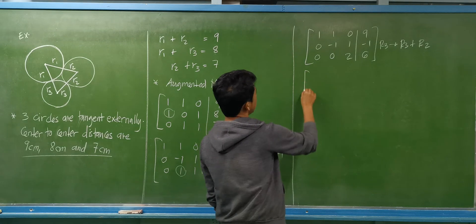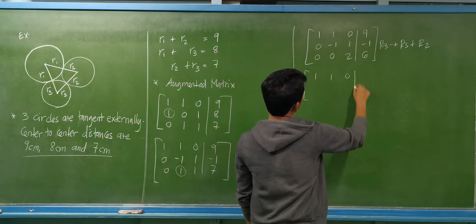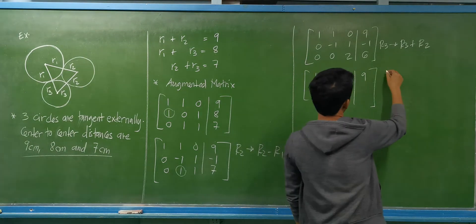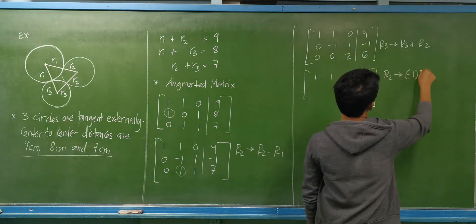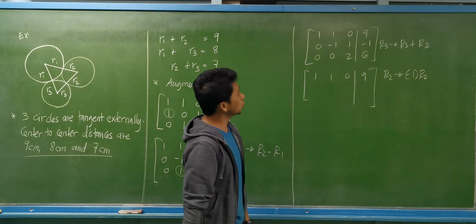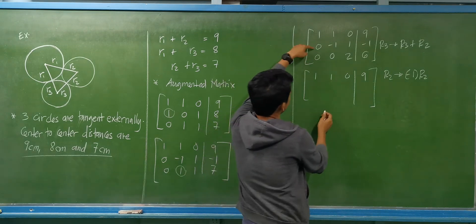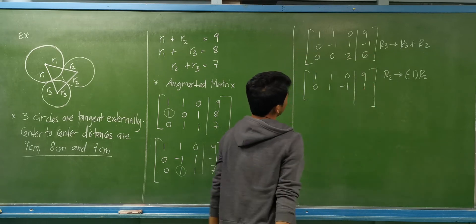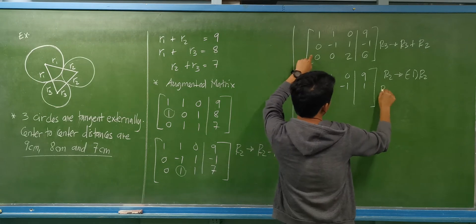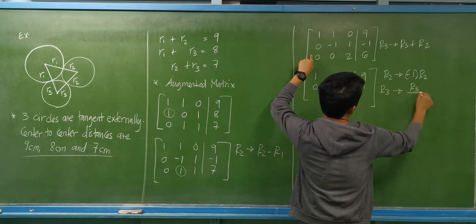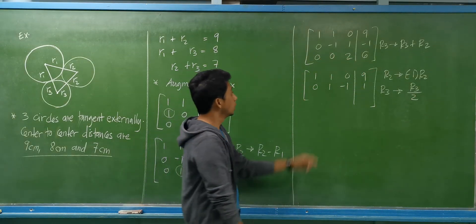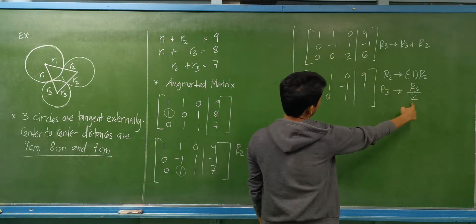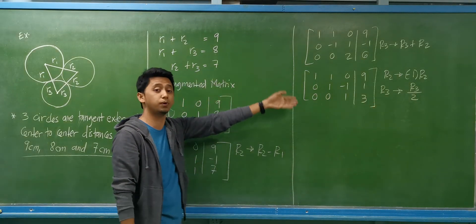We can simplify this matrix. For row 2, we multiply all elements by negative 1: 0 times negative 1 is 0; negative 1 times negative 1 is positive 1; 1 times negative 1 is negative 1; and negative 1 times negative 1 is positive 1. For row 3, we divide all elements by 2: 0, 0, 1, and 3.